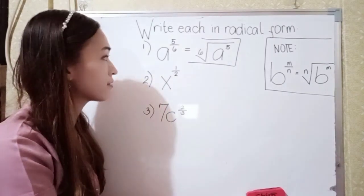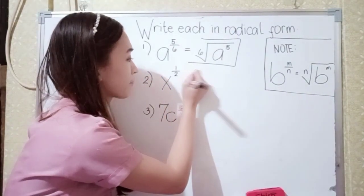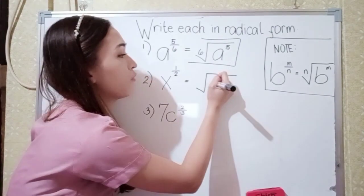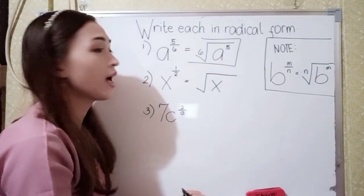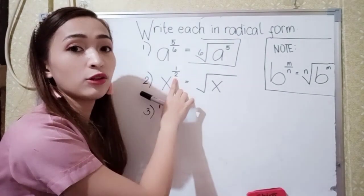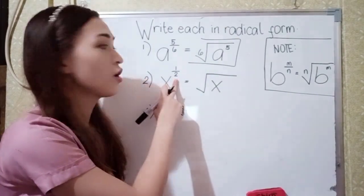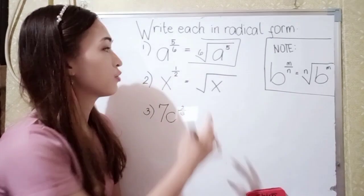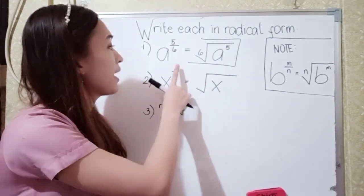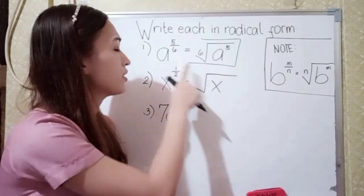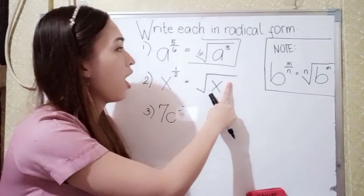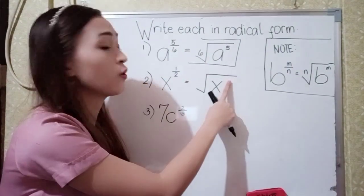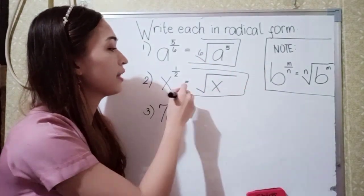Number 2, we have x raised to 1 half. We write the radical sign and the base would be our radicand. Our denominator would be the index. Since this is 2, we don't need to write 2 here because this is already the square root. And since our numerator is 1, we don't write 1 as the exponent. So this is the final answer for number 2.